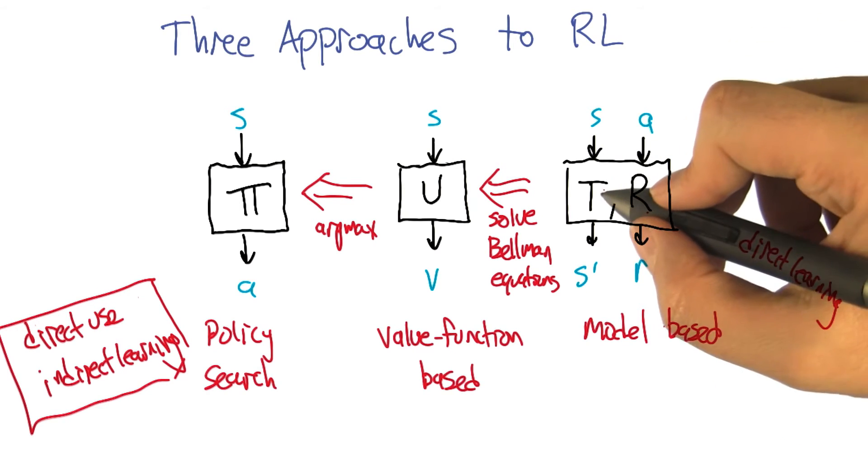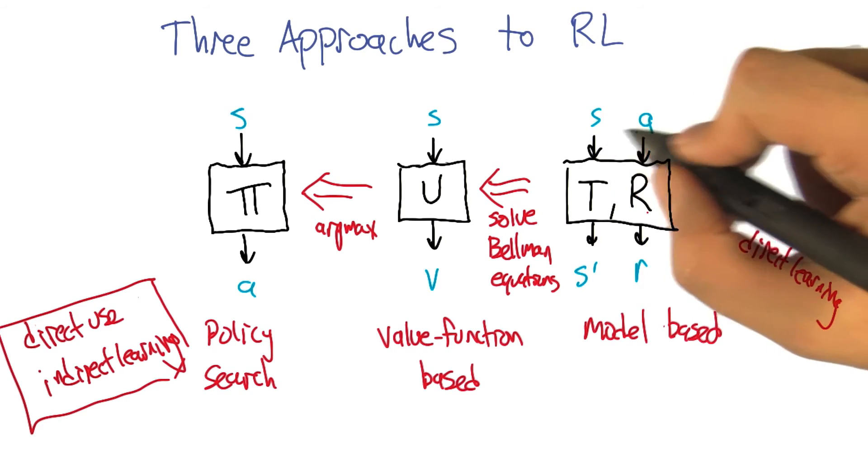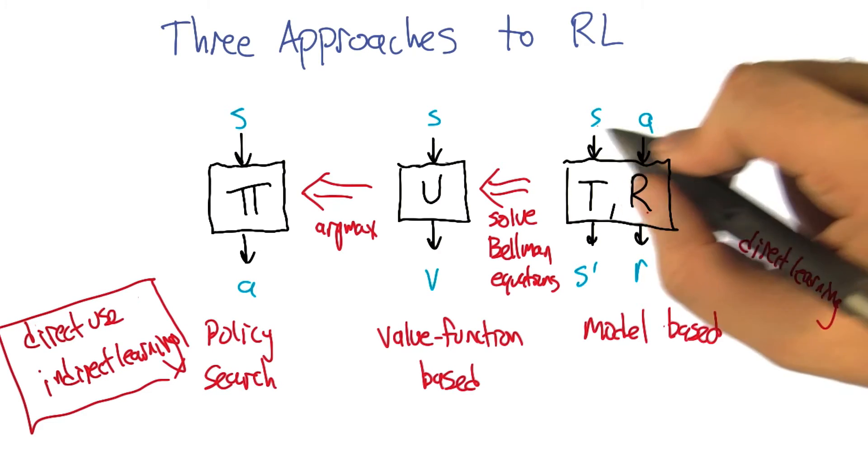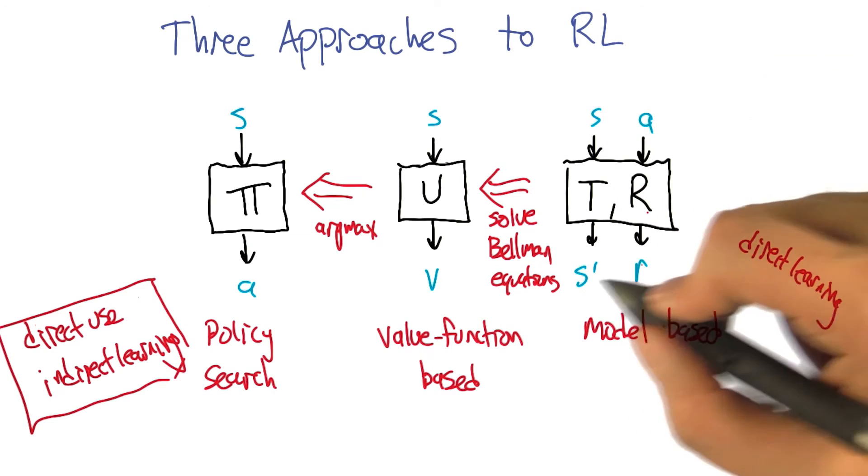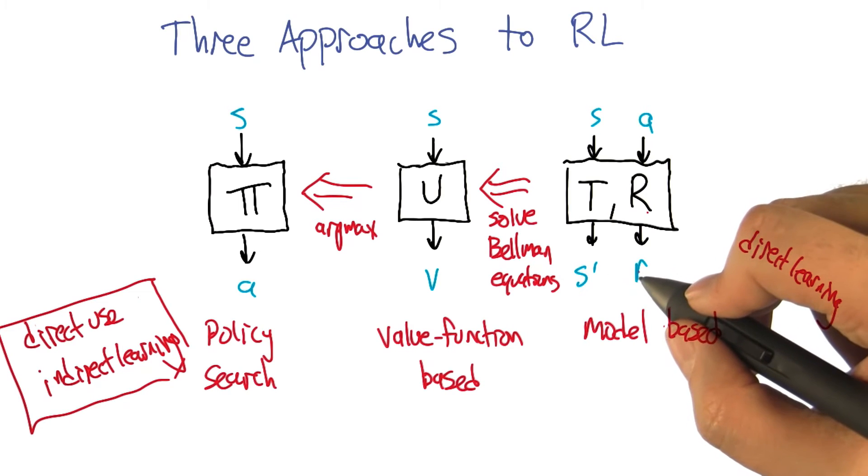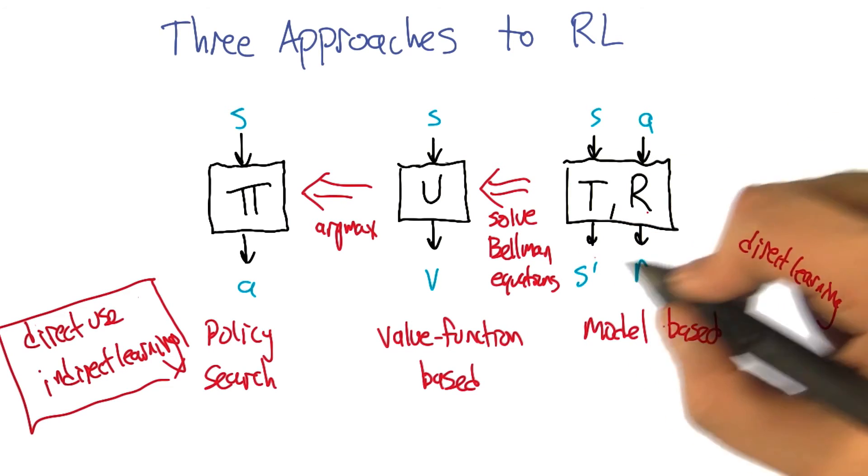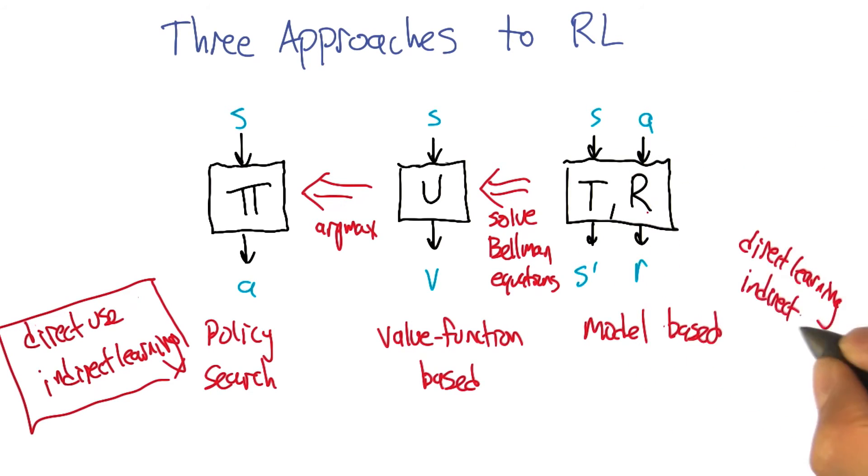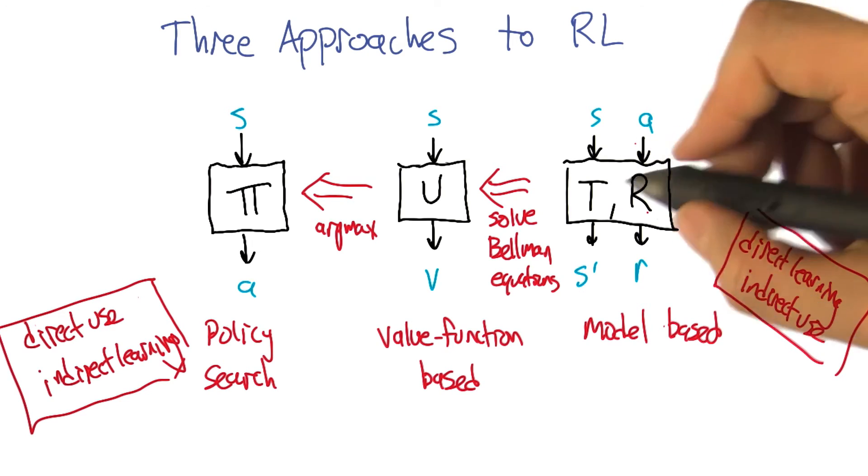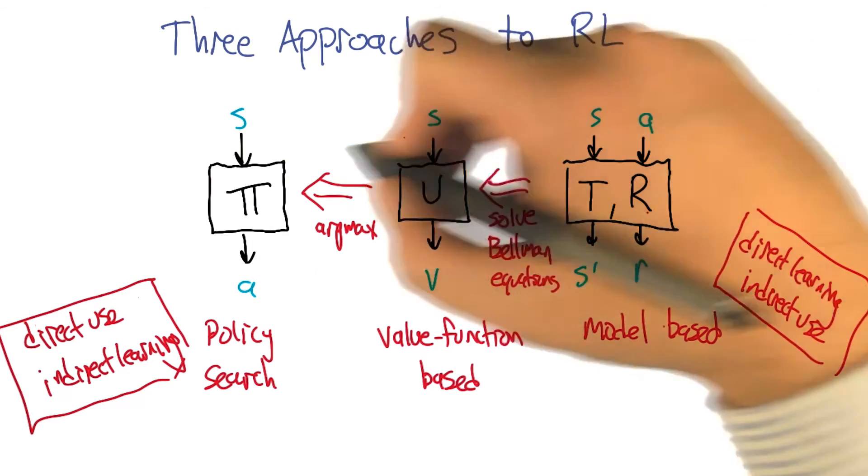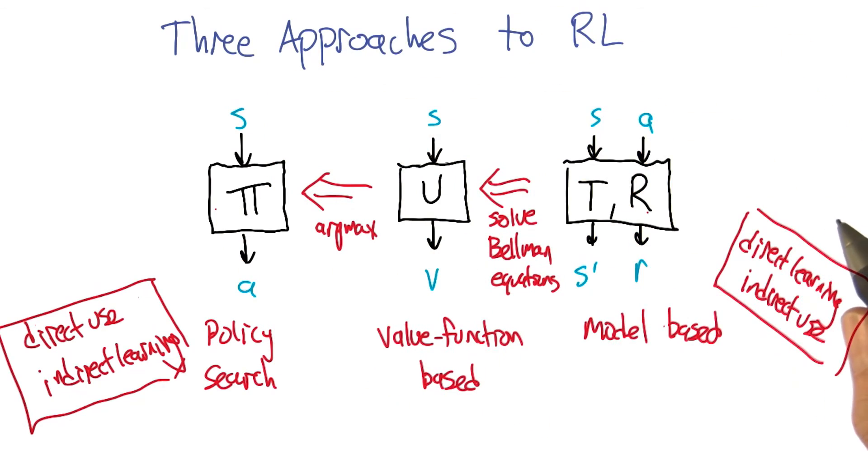So what happens over here is we actually have fairly direct learning. Why is that? Because when we're trying to learn the transition and reward function, we get state action pairs as input, and then we have received next state reward pairs as output. So we can solve this as a supervised learning problem. So learning is rather direct. The usage of this is a little bit computationally complex, because you actually have to do the planning and then the optimizing to actually develop the policy.